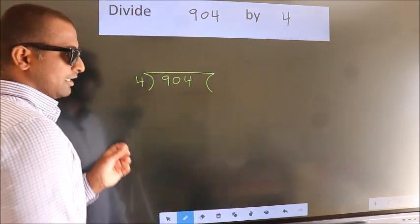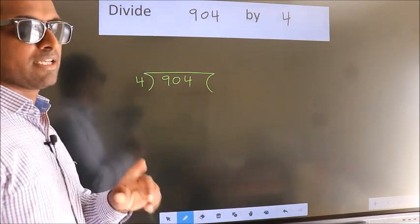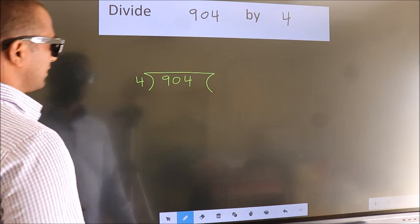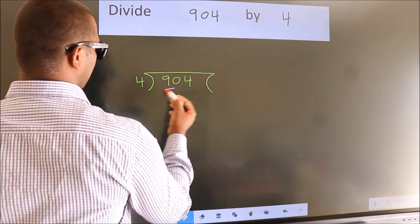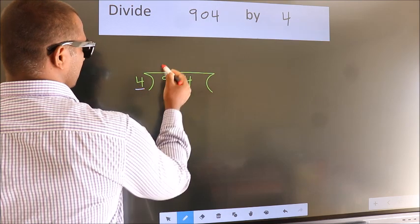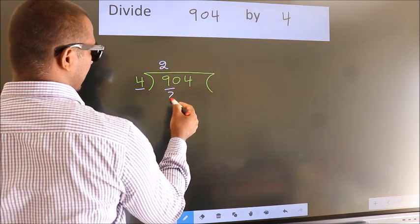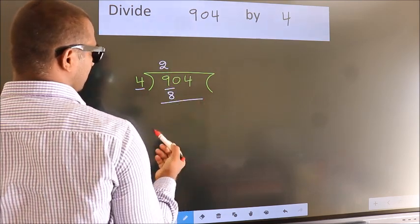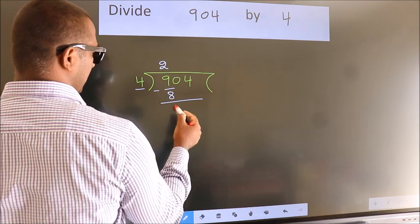This is your step 1. Next, here we have 9, here 4. A number close to 9 in the 4 table is 4 times 2, which is 8. Now we should subtract. We get 1.